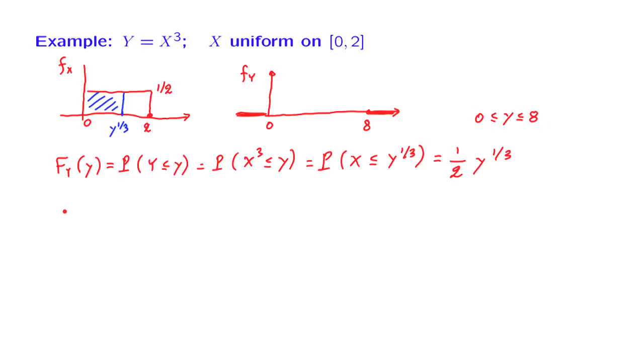This completes step 1. The second step is simple calculus. We just need to take the derivative of the CDF, and the derivative is 1 half times 1 third, this exponent, y to the power of minus 2 thirds. Or, in a cleaner form, 1 sixth times 1 over y to the power 2 thirds.